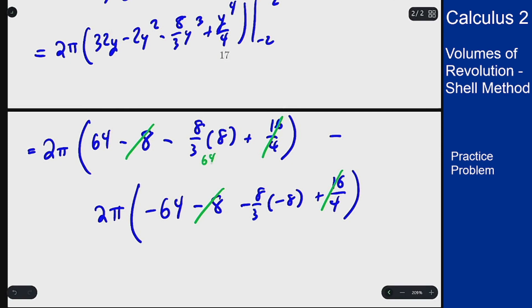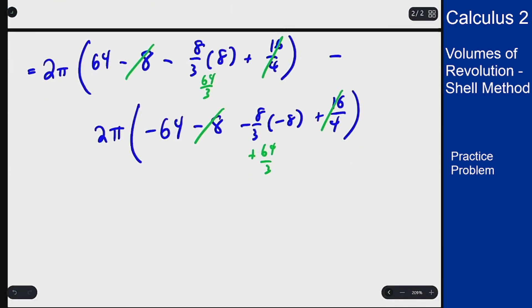And we'll see that these terms and these terms will cancel. This is a 64 over 3, as is this one. Meaning I'm going to see as a result, 2 pi. First will give me a 128 over 3, that's 2 times 64.